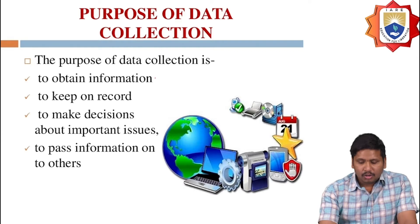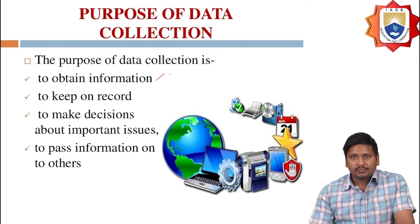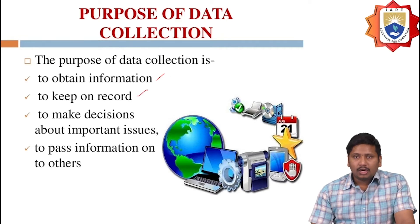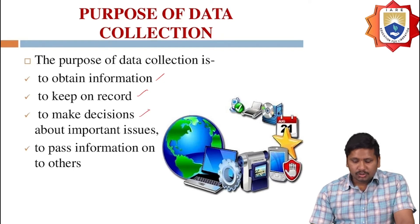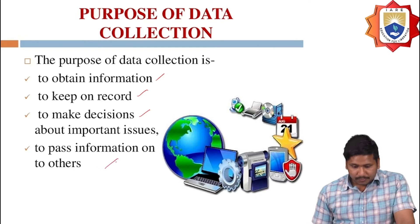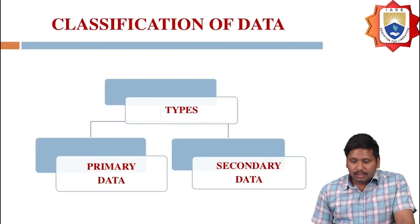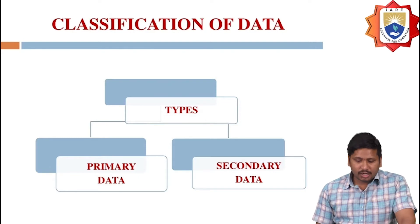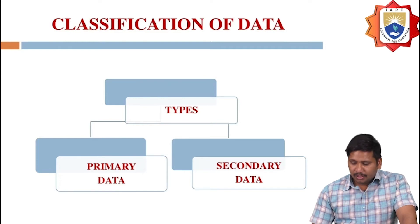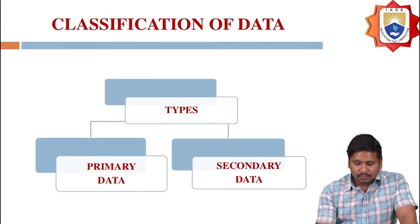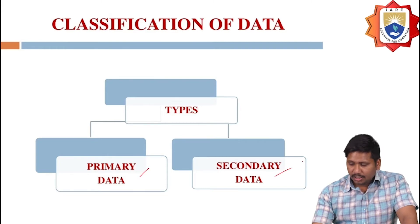The very first purpose is to obtain information. The main purpose of data collection is to obtain information, keep records, make decisions about important issues, and pass information to others. The classification of data is divided into two types: the first one is primary data and the second one is secondary data.